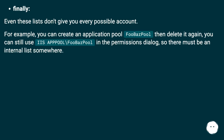Finally, even these lists don't give you every possible account. For example, you can create an IIS application pool called 'FubboPool', then delete it again — you can still use IIS AppPool\FubboPool in the permissions dialogue. So there must be an internal list somewhere.